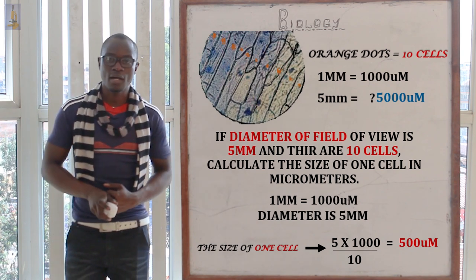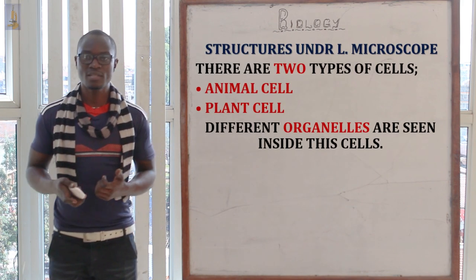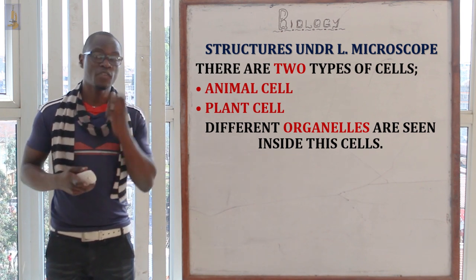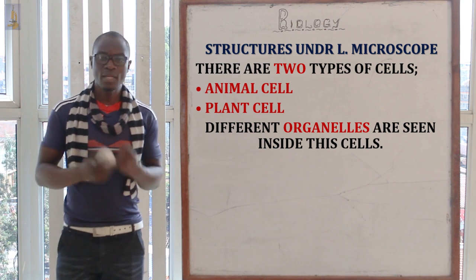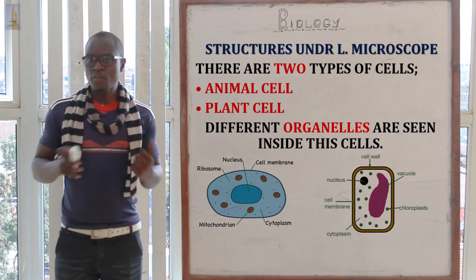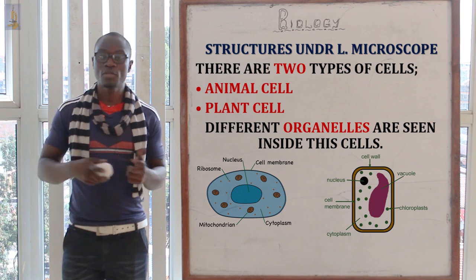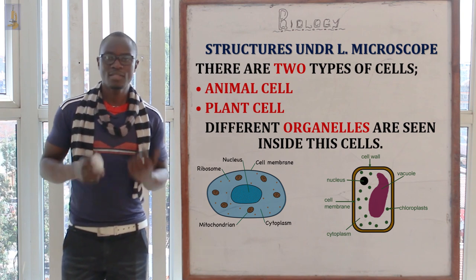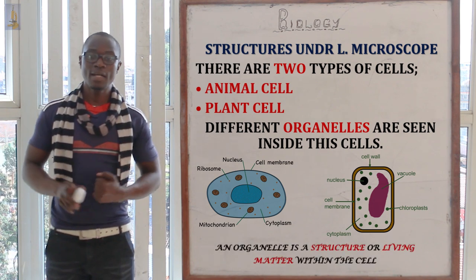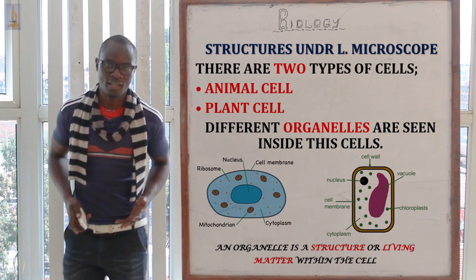Now let's look at the structures of cells as seen under the light microscope. There are two different types of cells: the animal cell and the plant cell, which are totally different. Different organelles can be seen in the animal cell but not in the plant cell, and vice versa. An organelle is defined as the small structures found inside the cell.